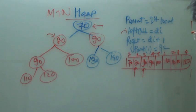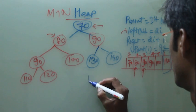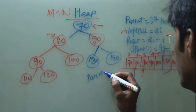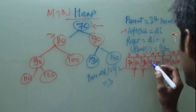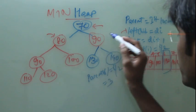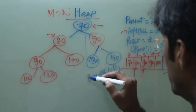So if I want to find what is the parent of 6, I will say parent of 6 is 6 by 2, that is the 3rd. So the 3rd position is 90. This is the parent.